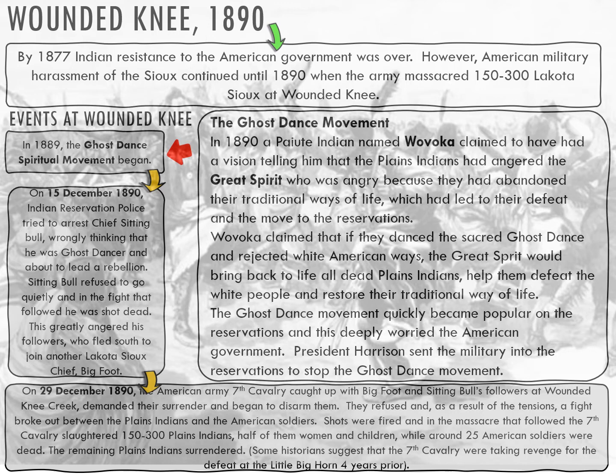Because of that massacre, the Ghost Dance movement emerged — Wovoka had a vision telling him that the Plains Indians had angered the Great Spirit, who was angry because they'd abandoned their traditional ways of life, which had led to their defeat at Wounded Knee. Wovoka claimed that if they danced the sacred Ghost Dance and rejected American ways, the Great Spirit would bring back to life all dead Plains Indians, who would then help them defeat the white man and restore their traditional way of life.